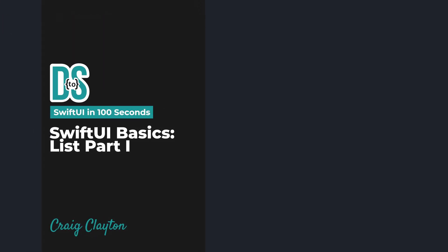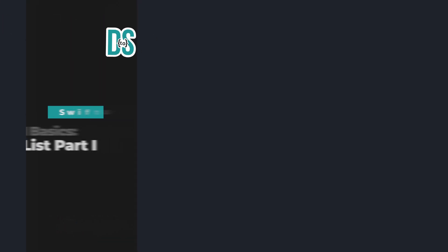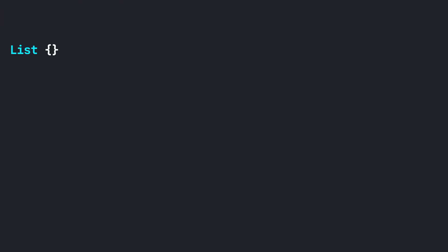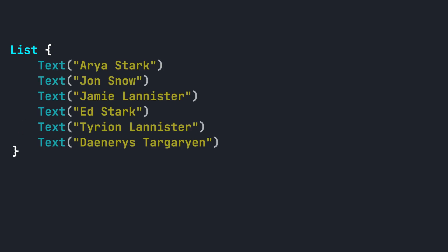In SwiftUI, we can create a list by simply starting with the word list and adding a text view inside. When using list, there are ways to customize the look of your list with sections and list styles. If you want to change your list style, you can use the .listStyle modifier.